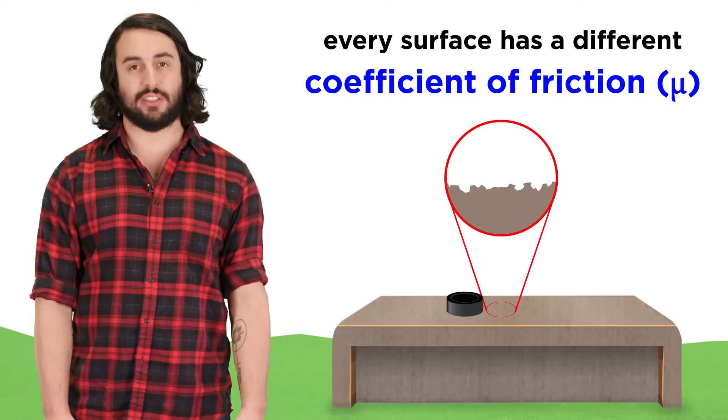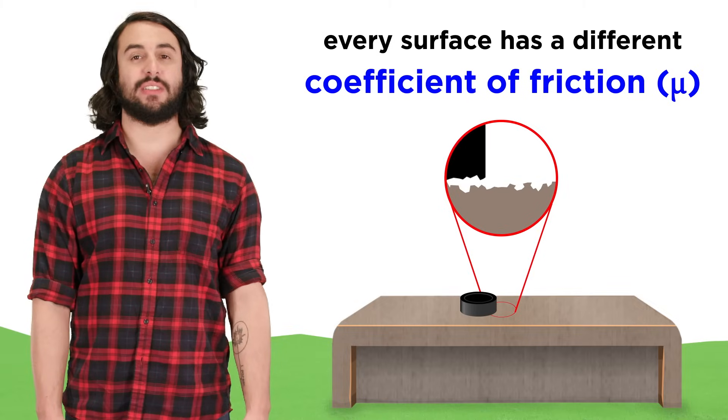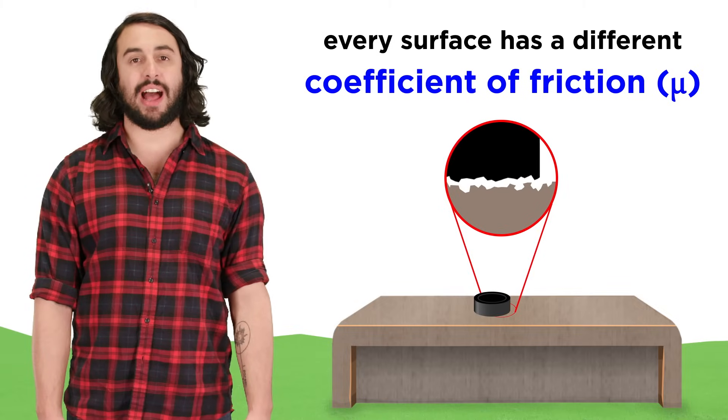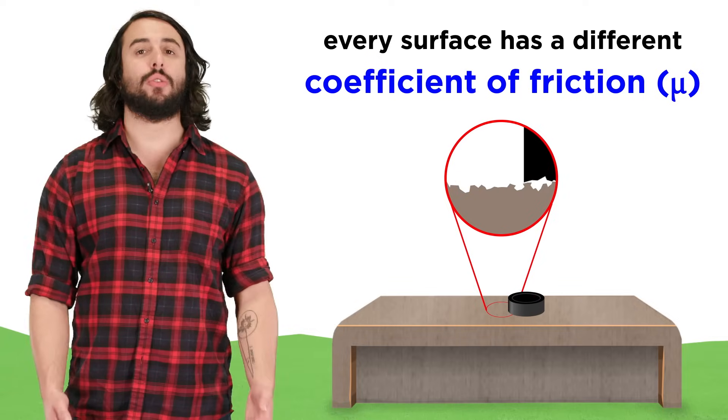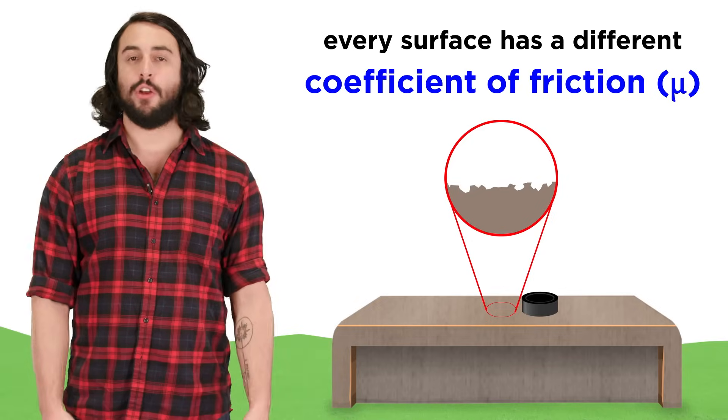As the object moves across the surface, there are select points of contact where atoms in the object interact with atoms in the surface, and this attractive interaction hinders motion to some measurable degree, no matter how small.